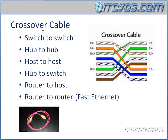The next type of cable is a crossover cable. This is wired so that the first wire at one end goes to the third position on the other end. The second one goes to the sixth position. The third one goes to the first position. The fourth one goes to the seventh position. The sixth one goes to the second position. The seventh one goes to the fourth position, and the last one goes to the fifth position.